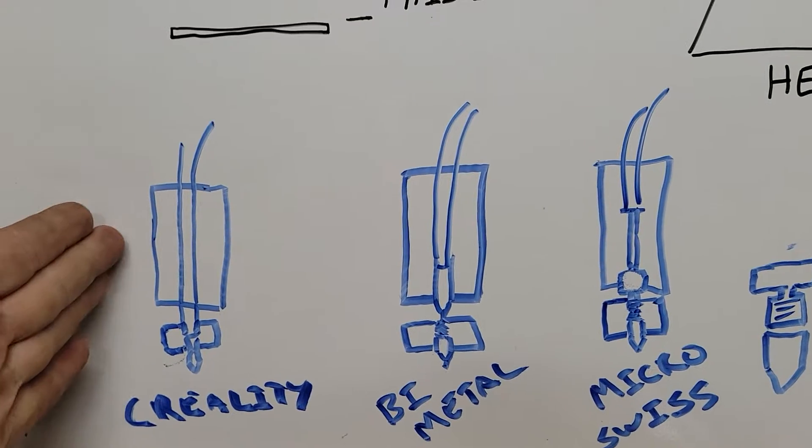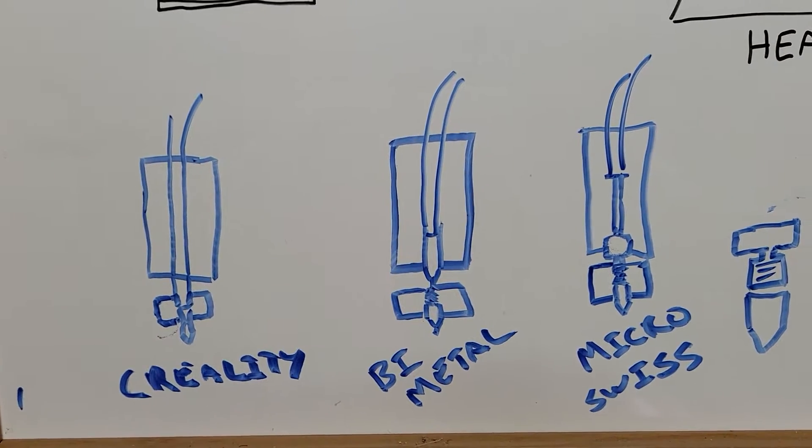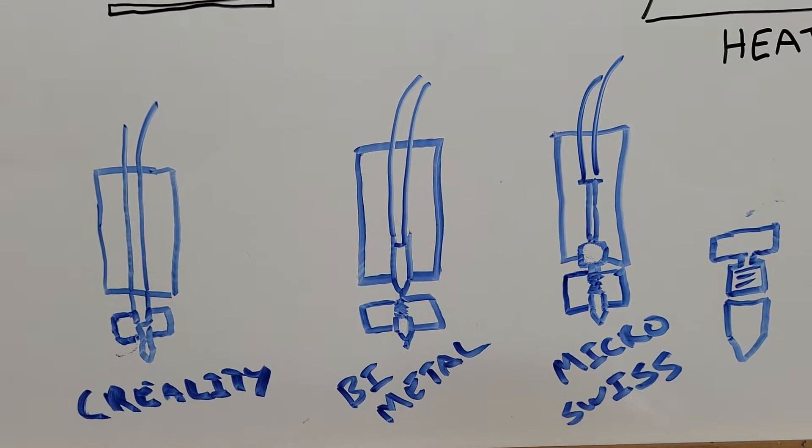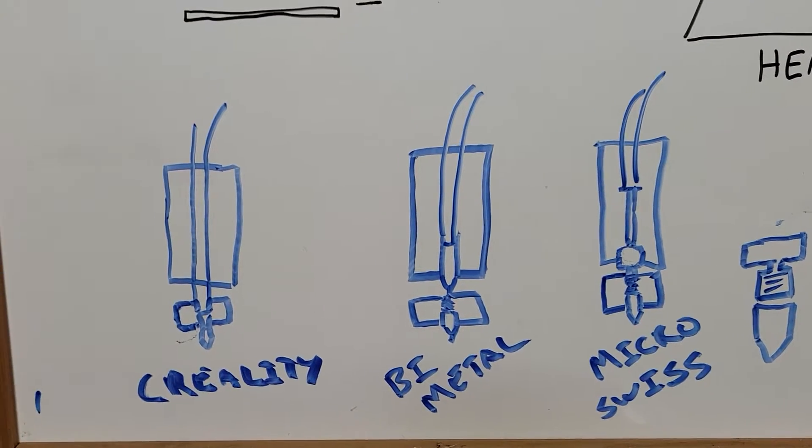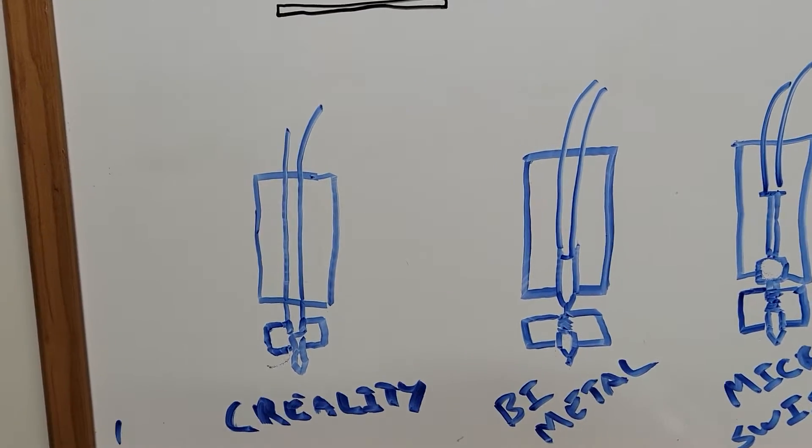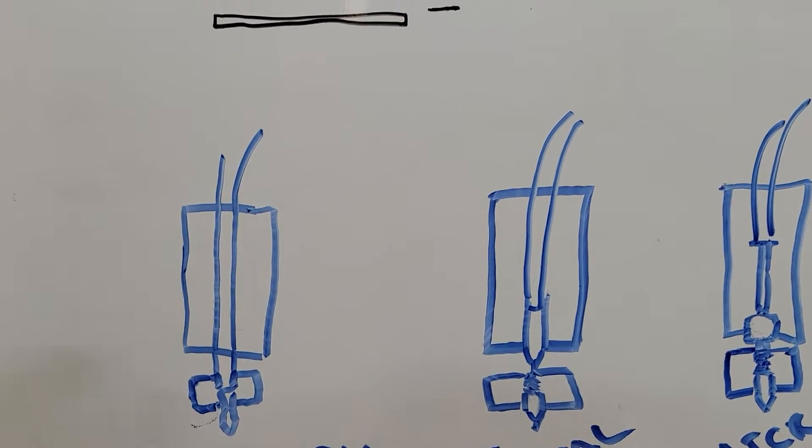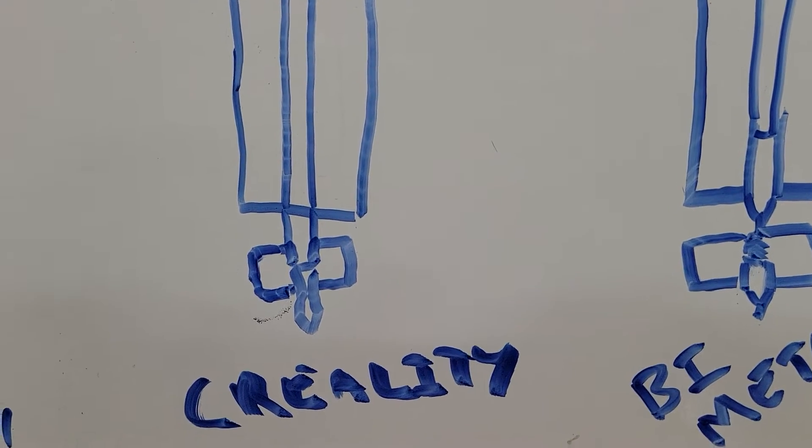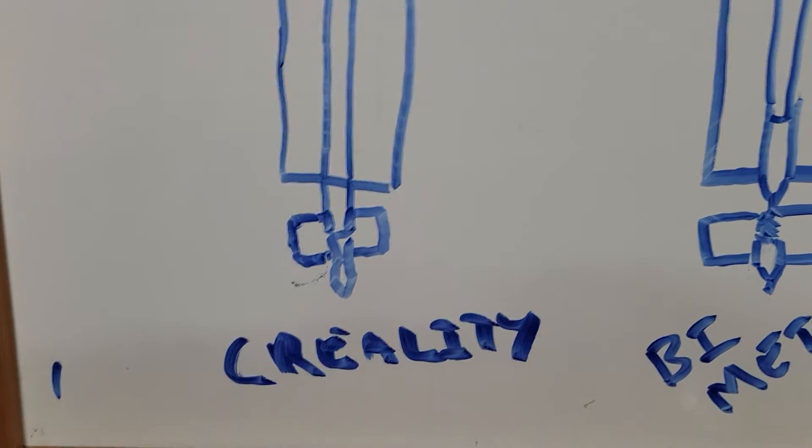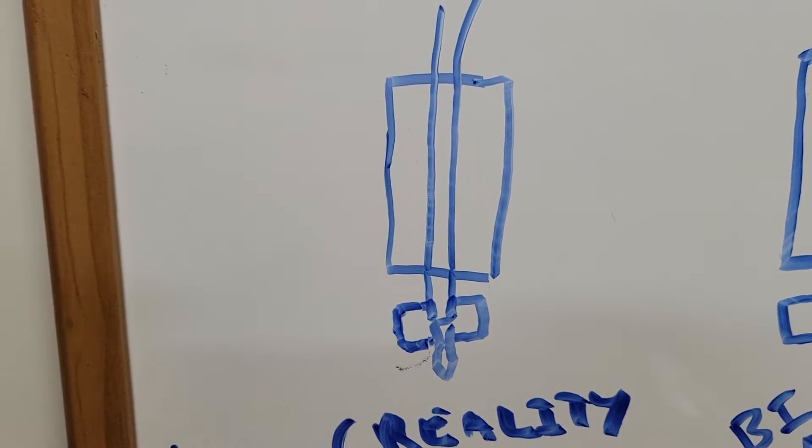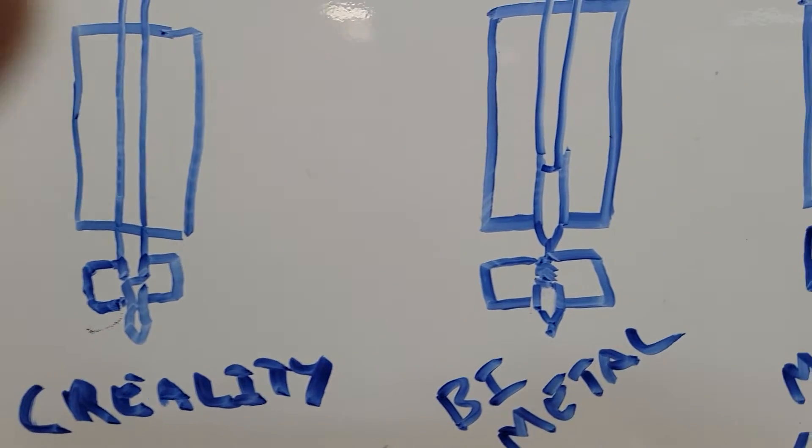So, we all know the Creality has a Bowden tube in it. Why does it have that tube in it? Well, that tube is acting as an insulator. What that is doing is it is insulating the filament from the heat. Of course, we know all about the problems of the separation down here. It's not the world's best design.